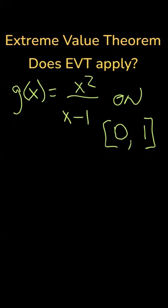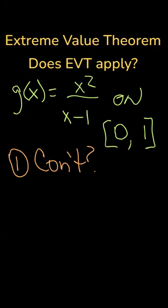How about this one? Does the extreme value theorem apply for g of x equals x squared over x minus 1 on the closed interval 0 to 1? First, we must check, is it continuous? Well, the function is a rational function which is continuous on its domain, but the domain does not include positive 1. That would make the denominator undefined. So, this function does not satisfy the conditions for the extreme value theorem, even though there is a closed interval.